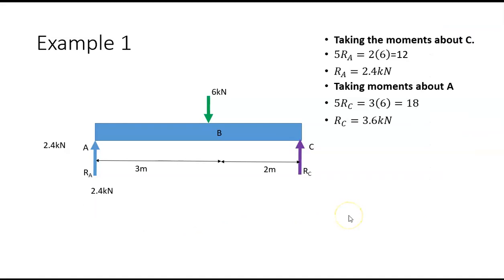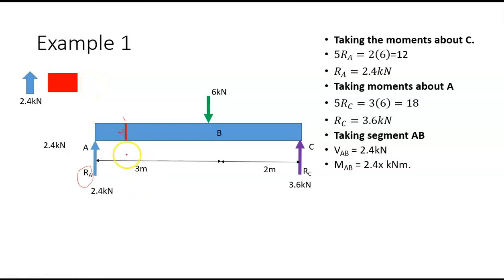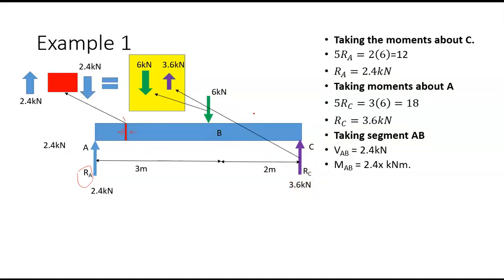I'm going to take a segment between A and B. Looking at the forces to the left of this segment, all we have is Ra, which is 2.4 kilonewtons. On the right-hand side we have six kilonewtons going down and 3.6 kilonewtons going up, which combine to give 2.4 kilonewtons downward. So the shear force in this segment is 2.4 kilonewtons, and since there's no change in forces between A and B, it's the same everywhere along that region.